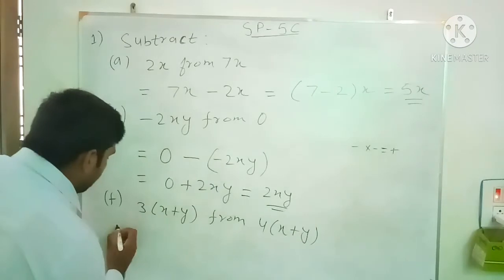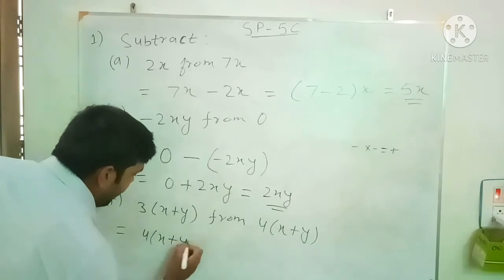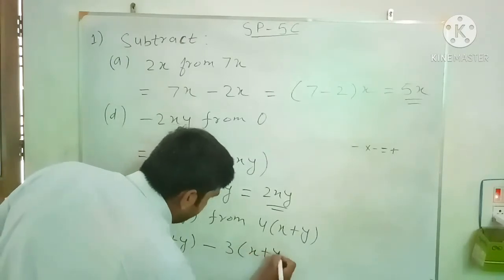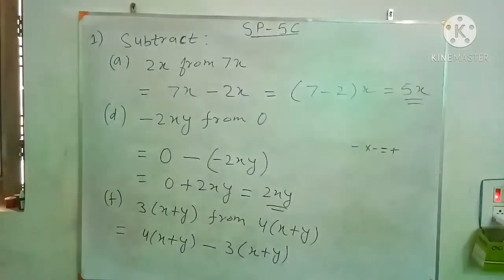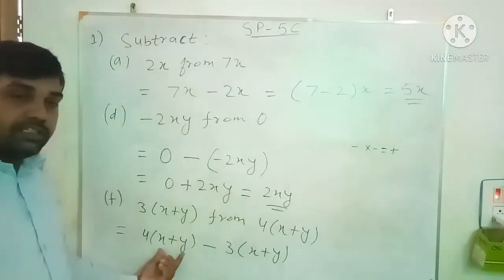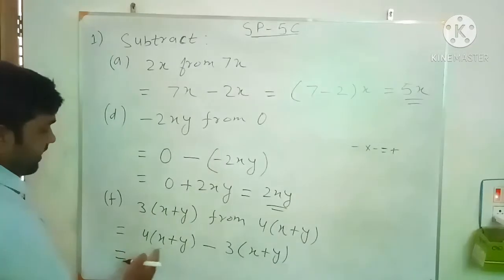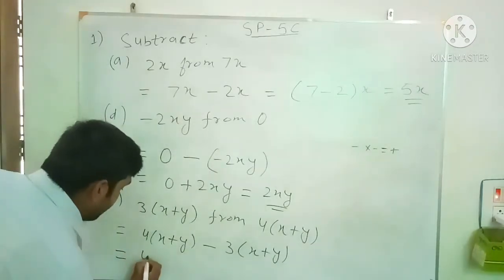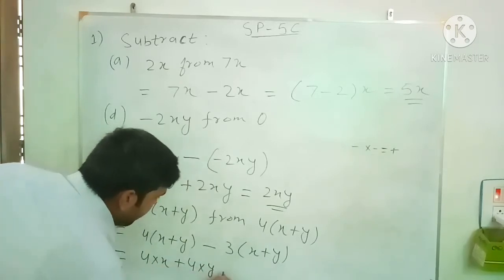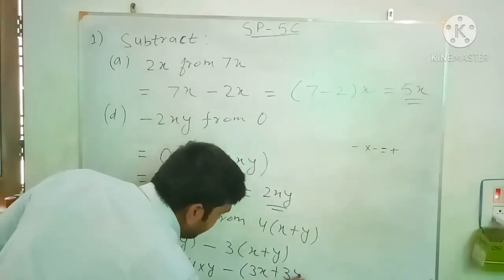See how we do it. Write the term after 'from': 4 times x plus y. For subtraction, put minus, and what we have to subtract is 3 times x plus y. Now multiply the constant term with the terms in the bracket. Multiply 4 with x and y: 4 into x plus 4 into y. Then multiply 3 into x gives 3x, plus 3 into y gives 3y.